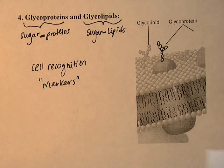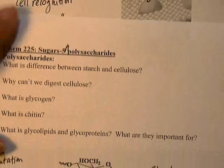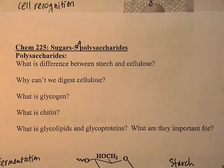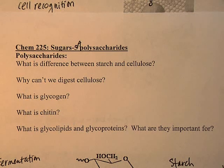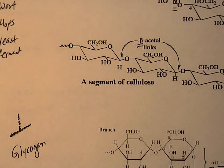You should now be able to answer all the questions that were the goals of the last two lectures: what is chitin, what are glycolipids and glycoproteins, and what is their function or importance. That concludes the sugar chemistry for this unit.